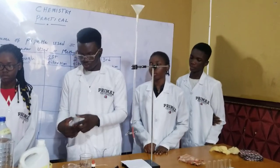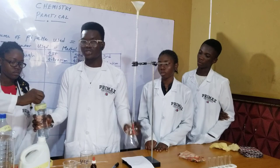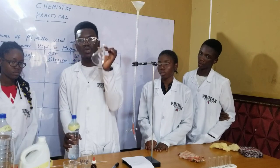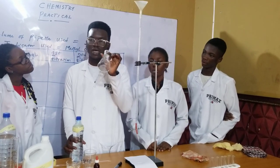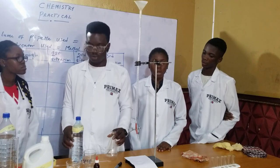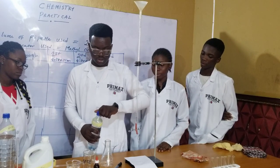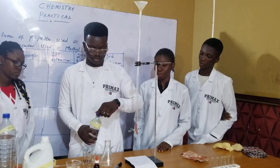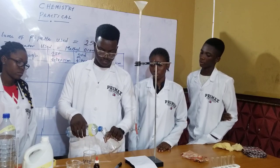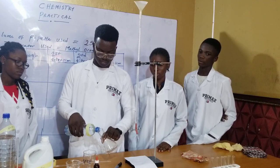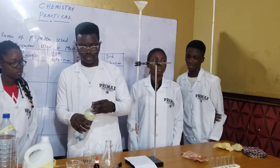The second precaution: you use distilled water to rinse your conical flask before you put your base. You don't use the base to rinse the conical flask — that would increase the volume too much. So use distilled water to rinse the flask.